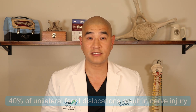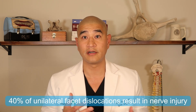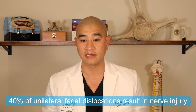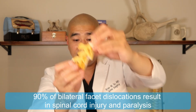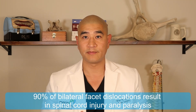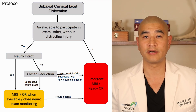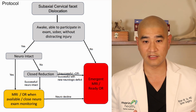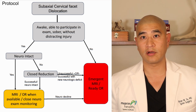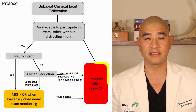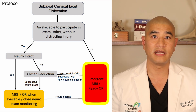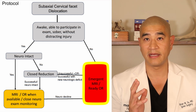Subluxated facets are not as serious as perched facets, which are not as bad as unilateral or bilateral facet dislocations. 40% of unilateral facet dislocations are associated with some kind of nerve injury causing arm pain or weakness. 90% of bilateral facet dislocations involve significant pinching of the spinal cord, resulting in spinal cord injury and paralysis. The protocol for treating these injuries is extremely complicated, but almost all end up in the operating room needing plates, rods, screws, and cages to stabilize the spine and make the spinal cord safe.